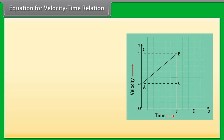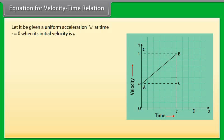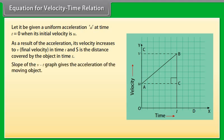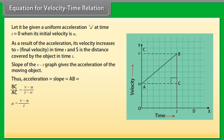Equation for velocity-time relation: Consider an object moving with uniform velocity U in a straight line. Let it be given a uniform acceleration A at time T = 0, when its initial velocity is U. Its velocity increases to V (final velocity) in time T, covering distance S. The slope of the V-T graph gives acceleration: A = slope = AB = (V − U) / T. Therefore V − U = AT, giving V = U + AT, which is the first equation of motion.